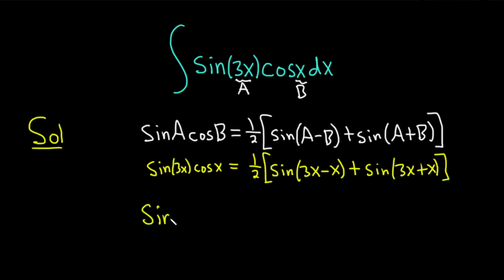Then the sine of 3x times the cosine of x equal to 1 half. And I'm going to go ahead and distribute the 1 half. So 3x minus x is 2x. So it's 1 half times the sine of 2x plus 1 half times the sine of, well, 3x plus x is just 4x. And then we have a parentheses.